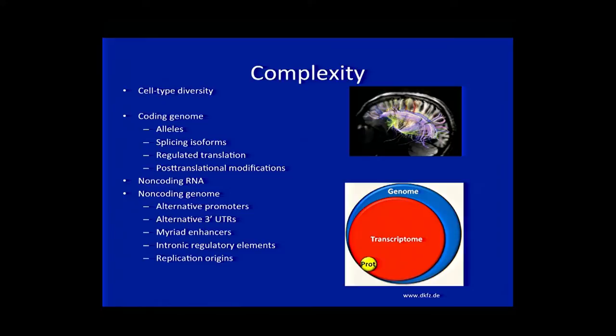In addition to non-coding RNA, the non-coding genome also contains all the regulatory features we are familiar with, like promoters, enhancers, and UTRs. But keep in mind there are alternative 5-prime UTRs, alternative promoters, alternative 3-prime UTRs that give diversity to a cell. There are myriad enhancers that haven't been characterized, and intronic regulatory elements that need to be discovered. Mammalian replication origins still remain out of our ability to predict, even though we know they are there.